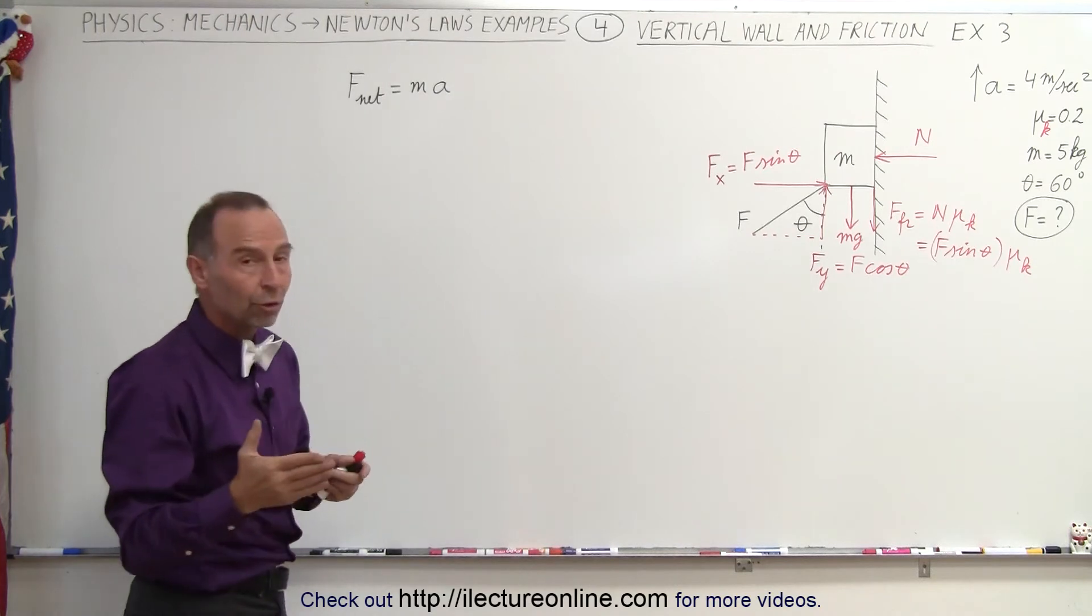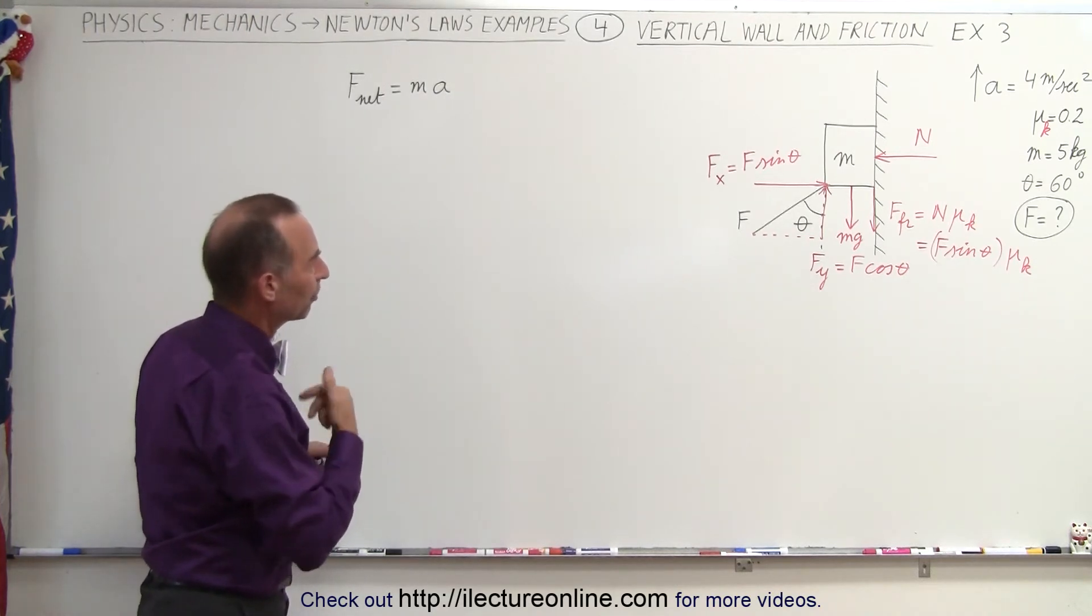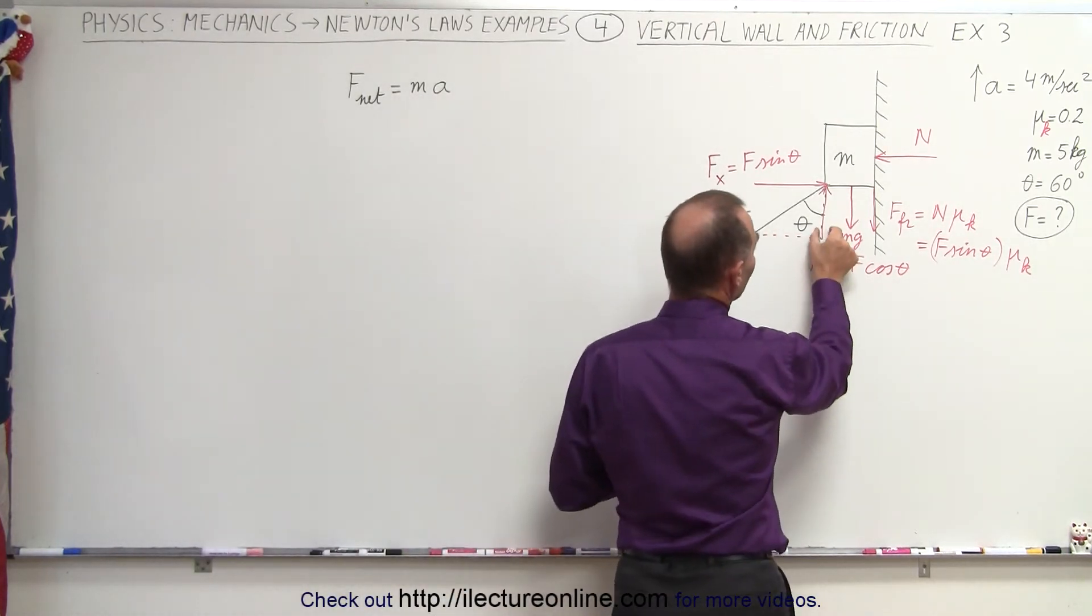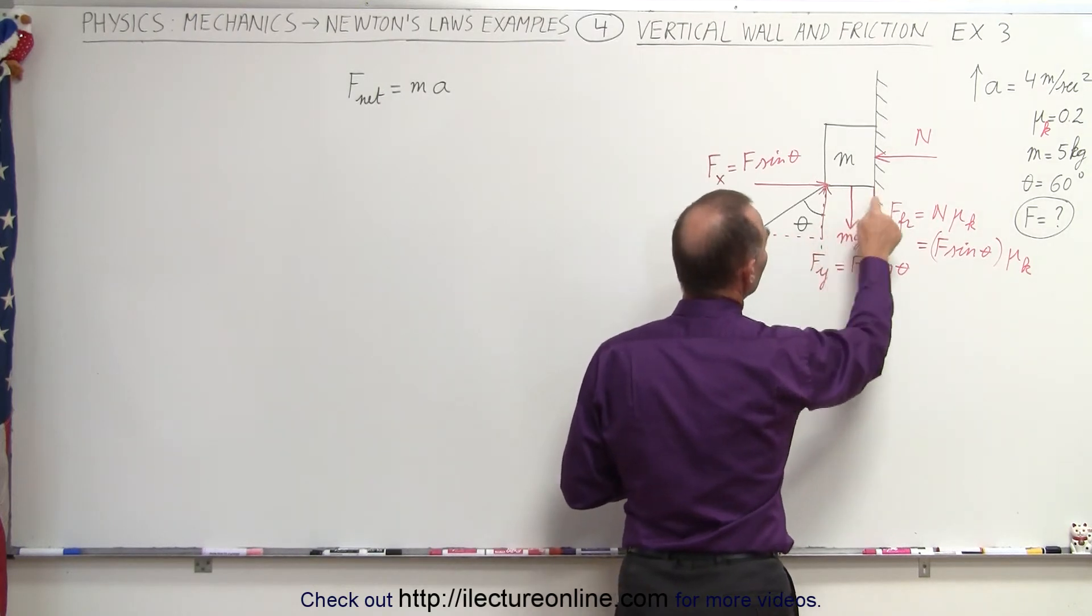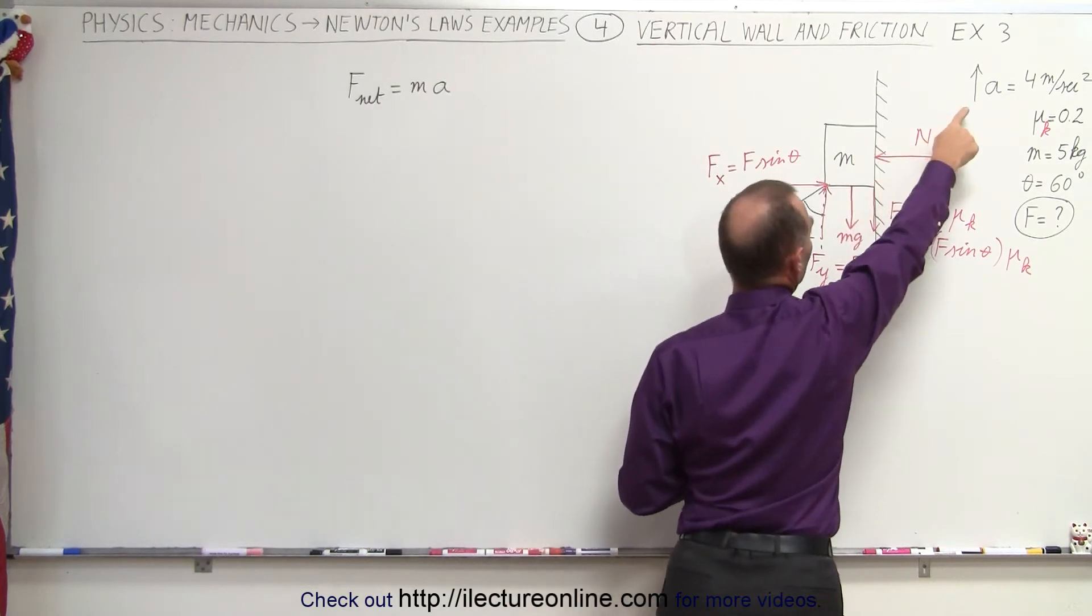Now the net force is going to be all the forces aiding acceleration, minus all the forces opposing. When we say aiding, we mean forces in the same direction. Notice only one force pointing in the same direction, which is the y component of F. The other two components, the weight and the friction force, are in the opposite direction to the acceleration, which means they're opposing the acceleration.